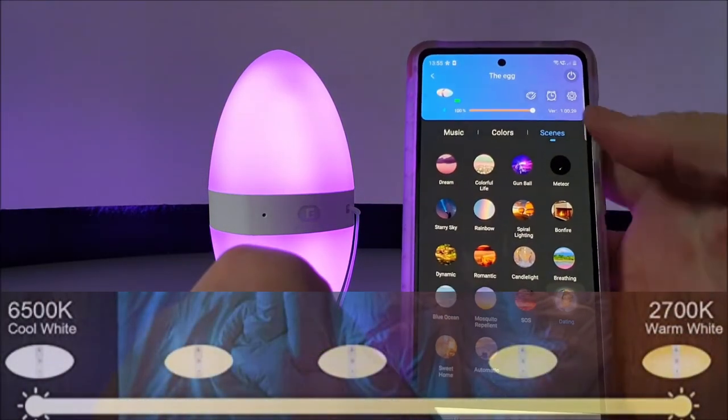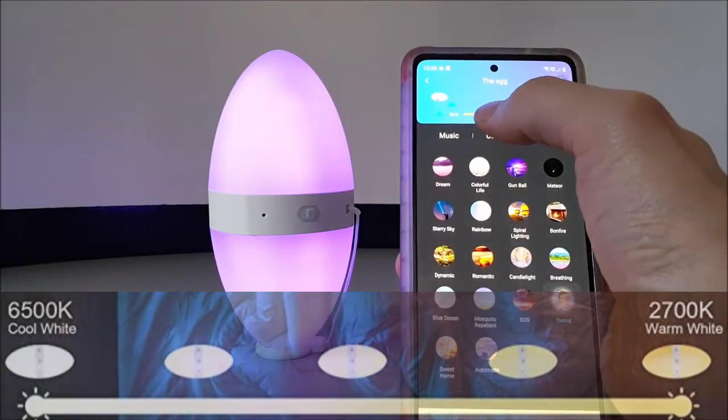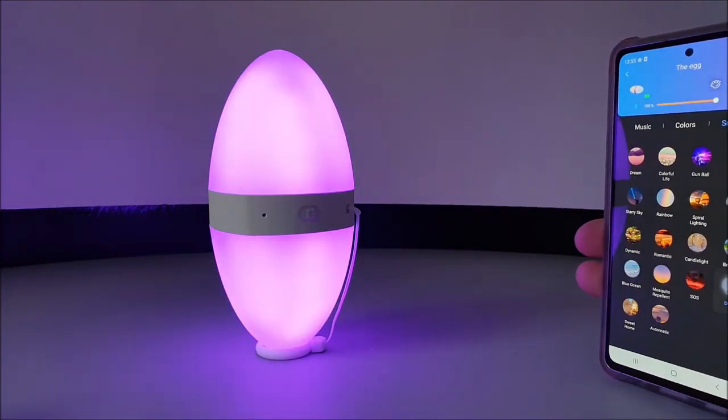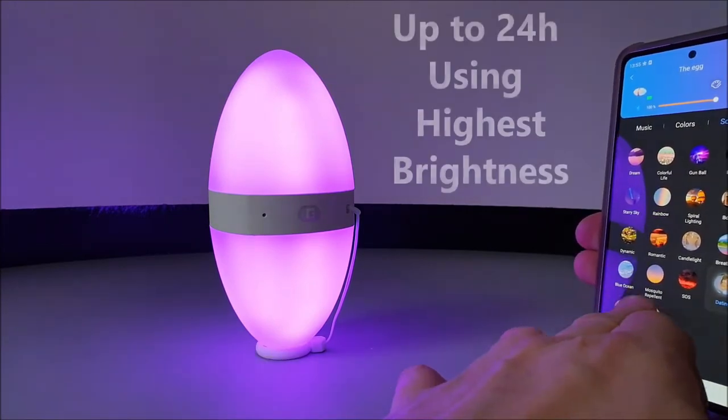You can in fact dim that light all the way down to 2700 kelvin or up to 6500 kelvin depending on your mood setting. You'll have four hours use on its highest brightness setting but up to 24 hours use on its lowest setting.